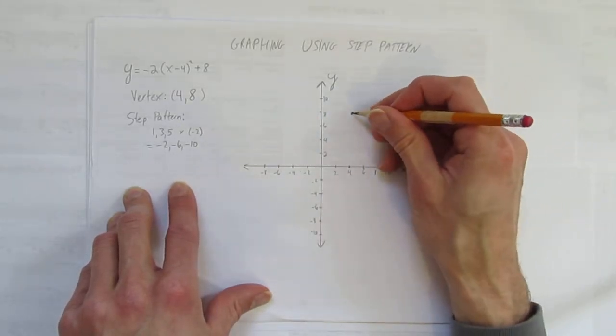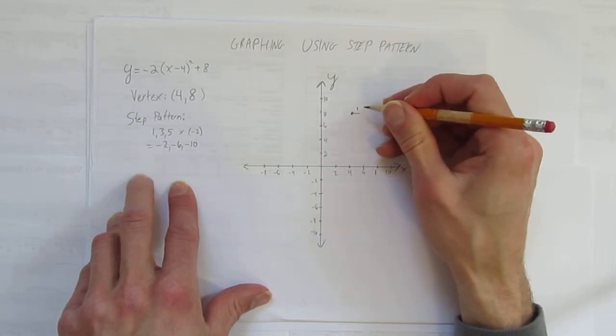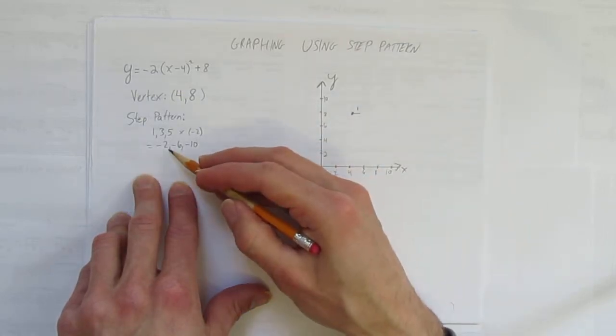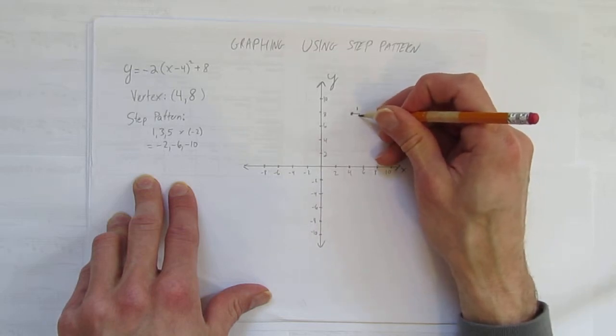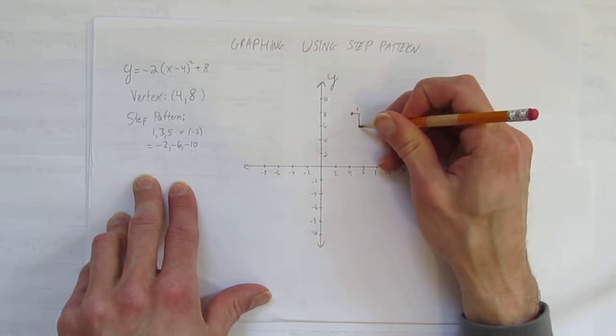It's always step over to the 1. So I'm going to go 1 to the side. And then I'm going to count down by the step pattern. So first, step over 1, go down negative 2. So I go down here to negative 6, and put a dot.